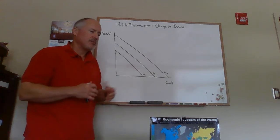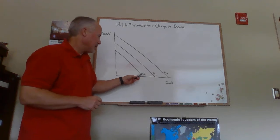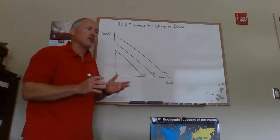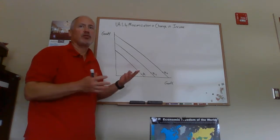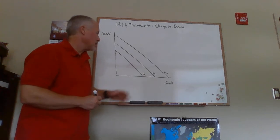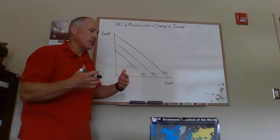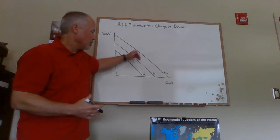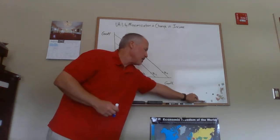I use a convention from technical drawing: if two lines on a graph are parallel, you put two little slash marks through them. Any two lines with those slash marks are intended to be parallel. This matters because the slope of the budget line is the ratio of prices — so when prices don't change and only income changes, the slope does not change. We just shift the budget line in or out, giving us three different budget lines.